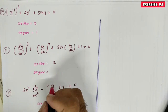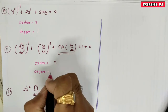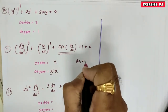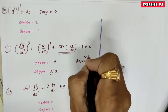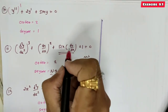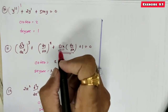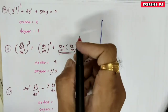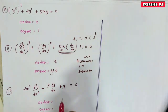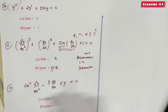Order is 2. Degree is not defined, because this is not a polynomial in derivatives. The derivative dy/dx should not appear inside trigonometric, inverse trigonometric, logarithmic, or exponential functions. It should only appear with plus, minus, multiplication, or positive integer powers. Since sin(dy/dx) is present, this is not a polynomial in derivatives, so degree is not defined.